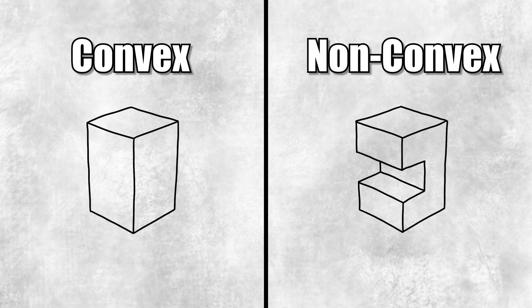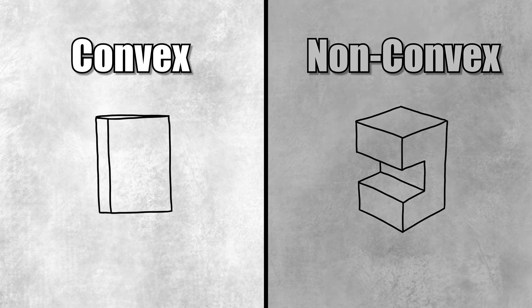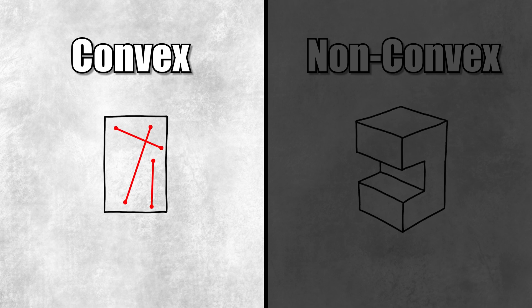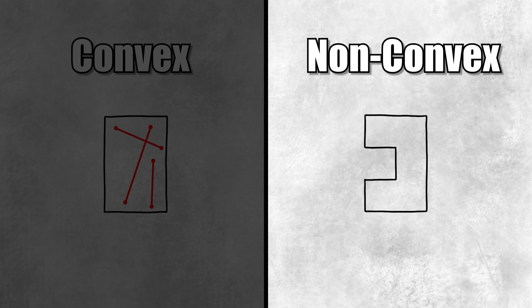Here's an example of the difference between convex and non-convex shapes. In a convex mesh, when you draw a straight line between any two points inside the mesh, the line itself will always stay inside the mesh. But with a non-convex shape, there are points that when connected by a straight line, the line will dip out of the mesh before re-entering to connect to the other point. So Unity does not want these kind of shapes for non-kinematic objects.